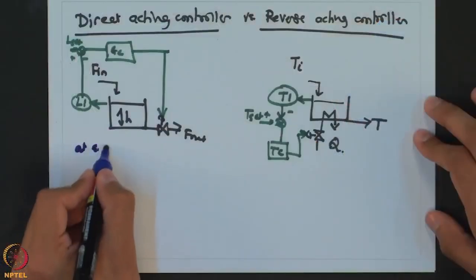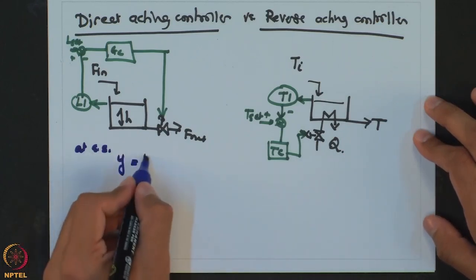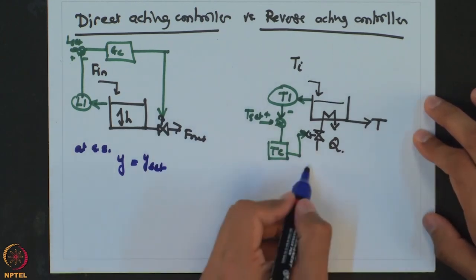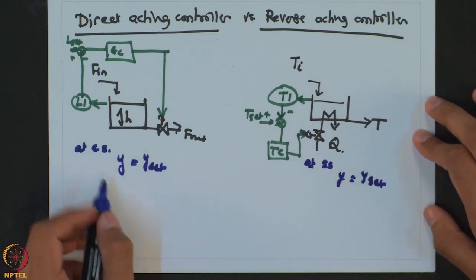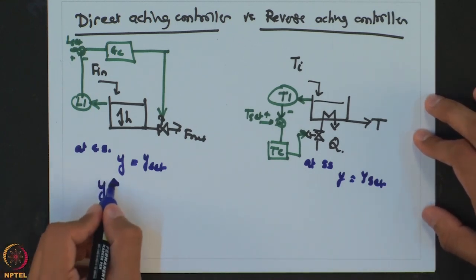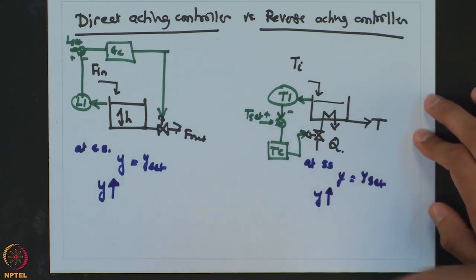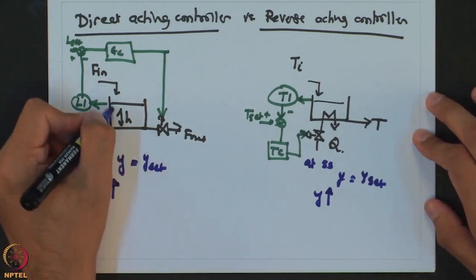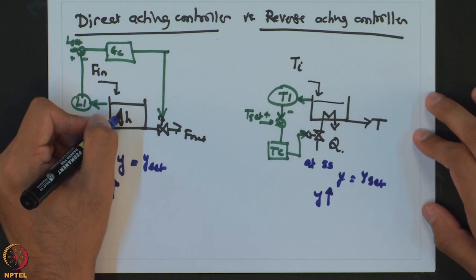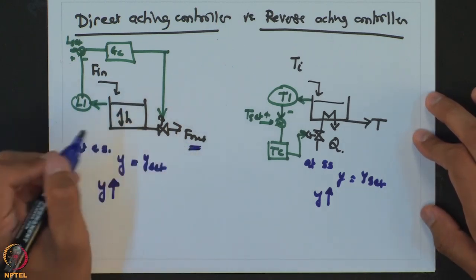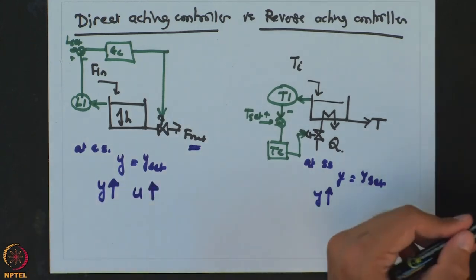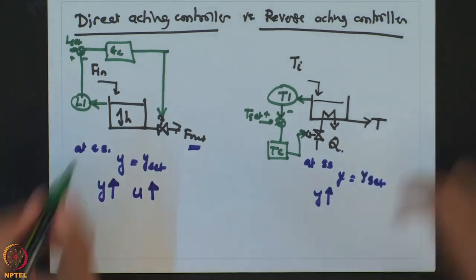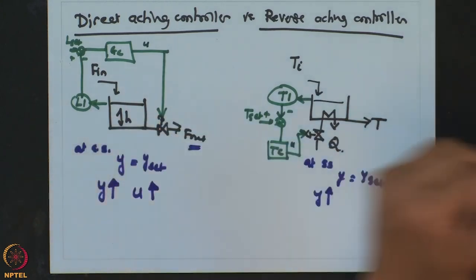Welcome back. In both cases, at steady state the output equals the set value. Let us say at some finite time, because of a disturbance, Y increases beyond the set point. In the level control case, as Y increases — meaning the height inside the tank increases — the control action needed is that the controller output should also increase. So if I represent U as the controller output, it has to increase when height increases, which ultimately results in an increase in F out.